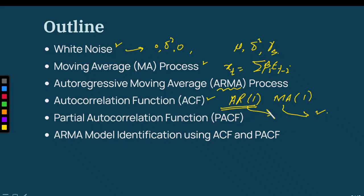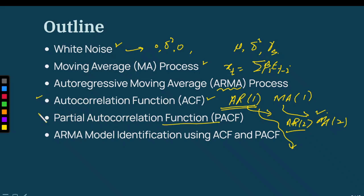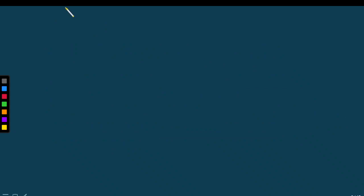Today we will discuss AR2 and MA2 to get further understanding. I will explain why for AR1 the ACF does not become zero after the first lag. We will also cover the concept of partial autocorrelation function (PACF) and ARMA model identification using ACF and PACF.